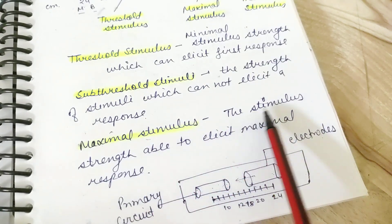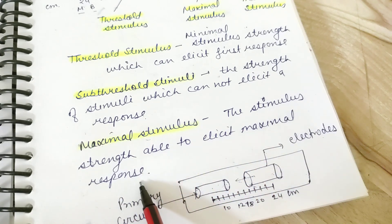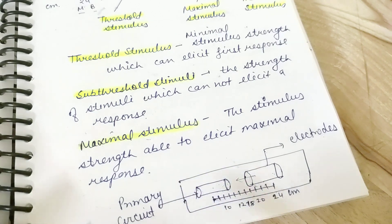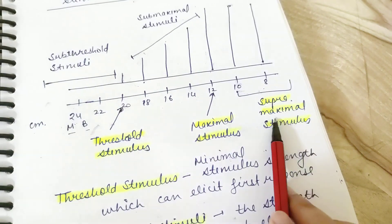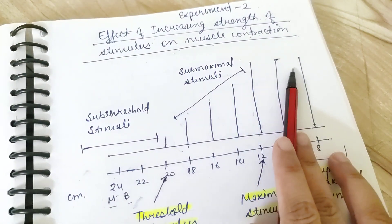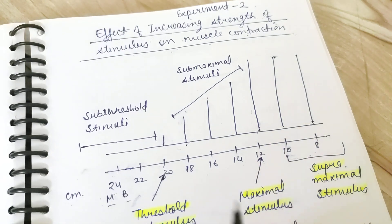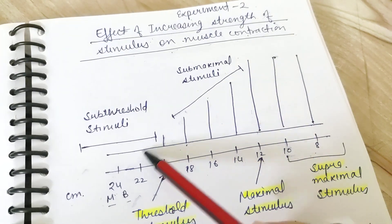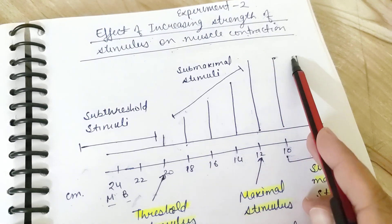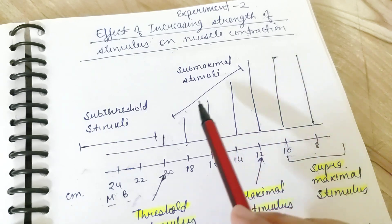Maximal stimulus is the strength able to elicit maximal contraction or maximal height of contraction. For supra-maximal stimulus, the question is: why is there no further increase in height of contraction? Your observation is that the height of contraction increases with increase in strength of stimulus up to a limit, after which there is no further increase.